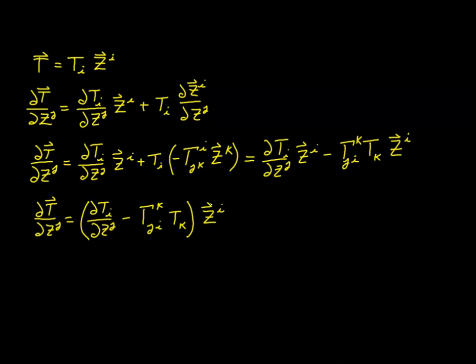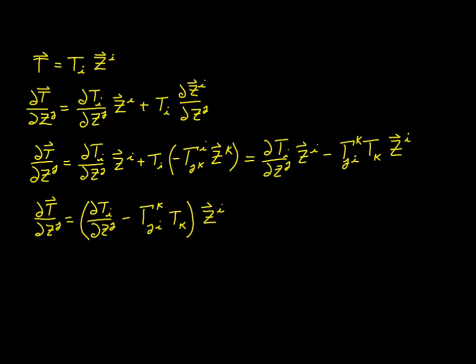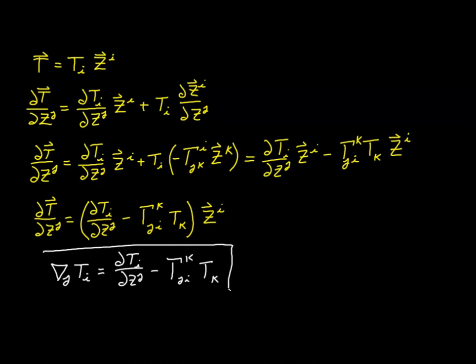What we finally have is a linear combination for the partial derivative. Because of the quotient theorem, we have a tensor on both sides and the expression is not zero, so this bracketed expression has to be a tensor. Therefore, it is our expression for the covariant derivative with respect to j of a covariant vector component, equal to the partial derivative of the component with respect to z_j minus gamma^k_ji times t_k. This is the result we're looking for.